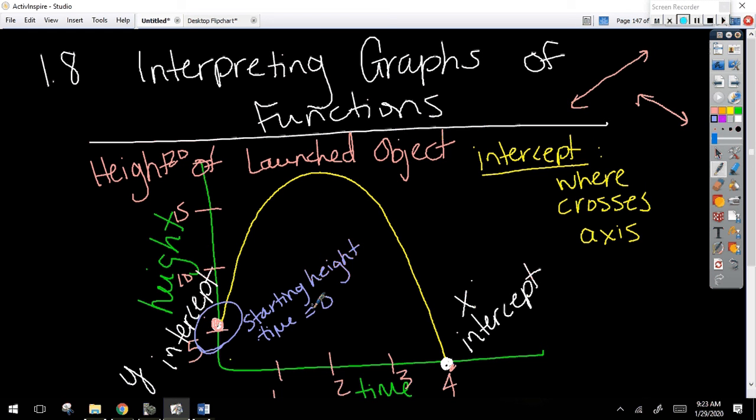Now look at the x-intercept. What does that represent, where it crosses that x-axis? I hear 4. That means, what's 4? We'll say 4 seconds later, but what does it represent? When it stops, the height is what? Ending meaning it's what? Zero. What is height zero?